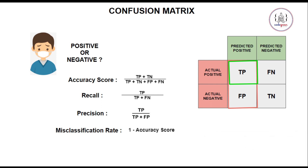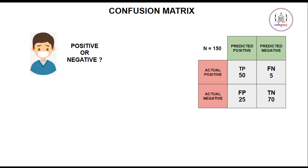We have talked about all these evaluation metrics drawn from the confusion matrix. Now let's take a numerical example. We have true positive = 50 cases, false negative = 5 cases, false positive = 25 cases, and true negative = 70 cases — a total of 150 patients in our study. Accuracy score = (50 + 70) / 150, which comes out to be 0.8.